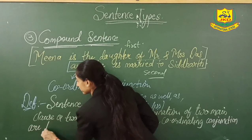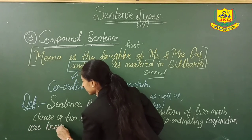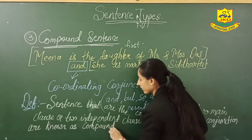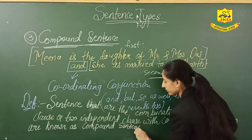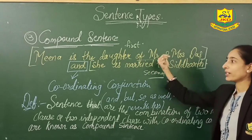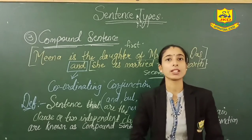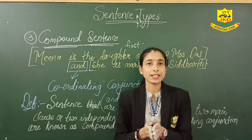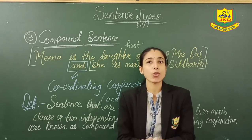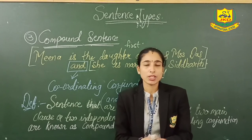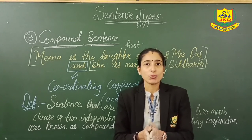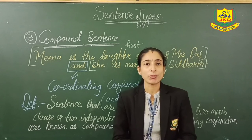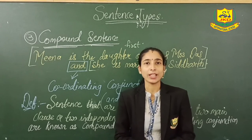Two independent clauses joined with co-ordinating conjunctions are known as compound sentences. So this is how you can understand about the compound sentence. In this video you must have understood about the sentence types — there are three types: simple sentence, complex sentence, and compound sentence, each with examples. For today, that's it, and I will be back with my next video on the next topic. Till then, stay healthy and be safe. Thank you.